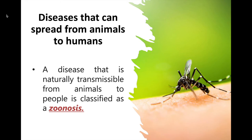Zoonotic diseases are actually caused by harmful germs like viruses, bacteria, parasites, and fungi. These germs can cause many different types of illnesses in people and animals ranging from mild to serious illness and even death. Animals can sometimes appear healthy even when they are carrying germs that can make people sick, and zoonotic diseases actually comprise a large percentage of new and existing diseases in humans.